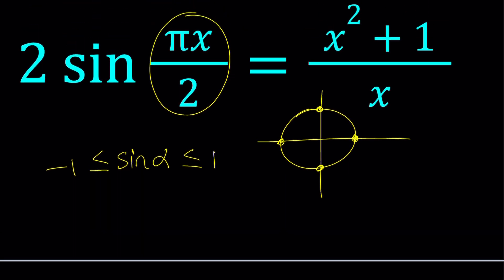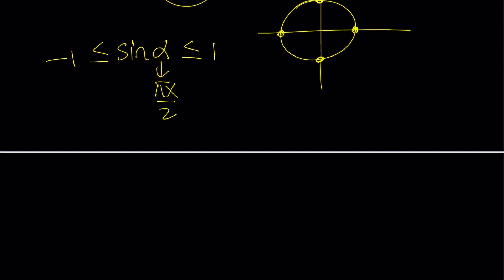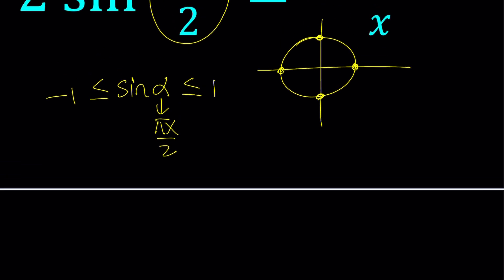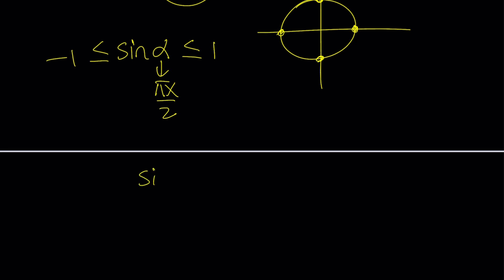So how do we use this information? Well I have the sine of something right? So I can replace α with πx/2 and this inequality will still be correct as long as x is real because π is real, two is real, always real right? So everything is real.